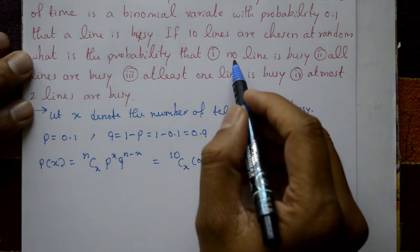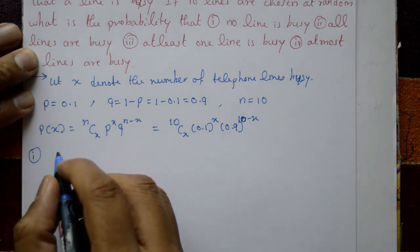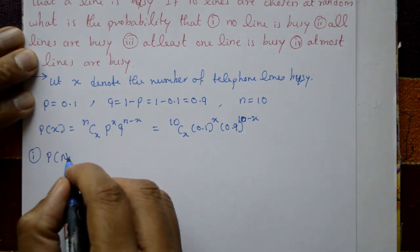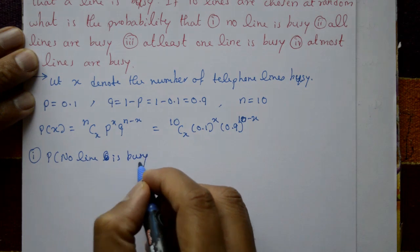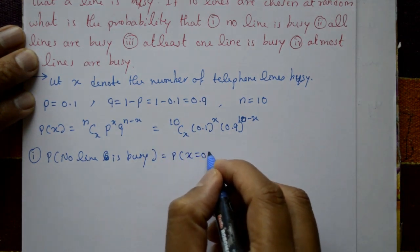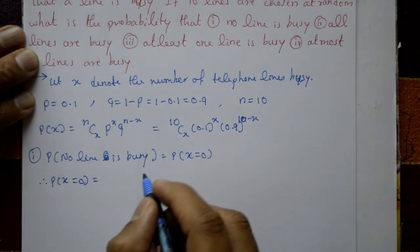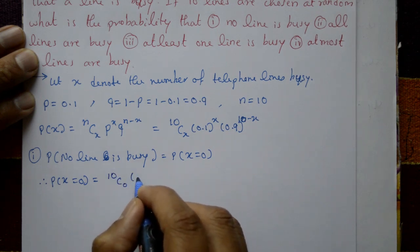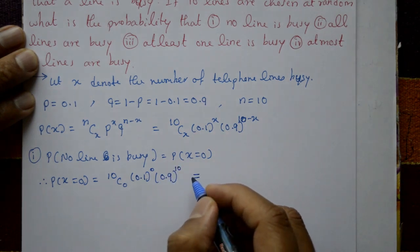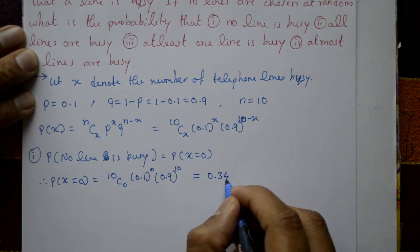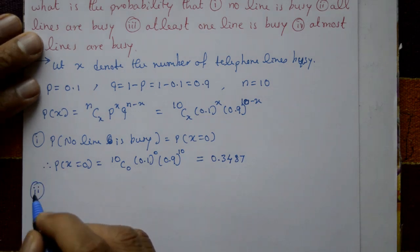Case 1: No line is busy. P(X = 0) = 10C0 · (0.1)^0 · (0.9)^10 = 0.3487.